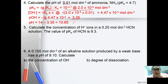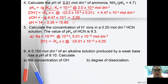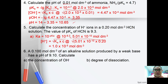Number 5: calculate the concentration of H⁺ in 0.20 mol/dm³ HCN. The pKa for HCN is 9.3, so anti-log to get Ka = 5.01×10⁻¹⁰. Applying [H⁺] = square root of Ka times C, you get [H⁺] = 1.0×10⁻⁵ mol/dm³.